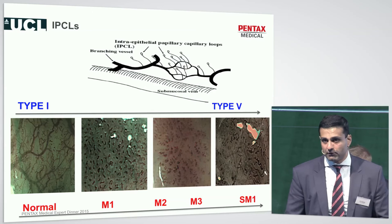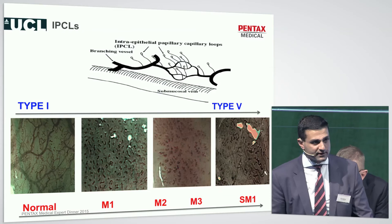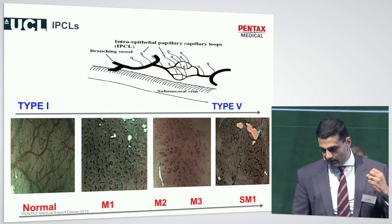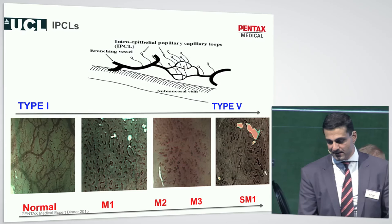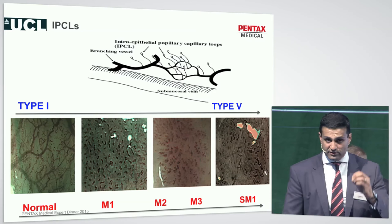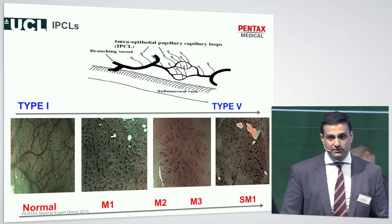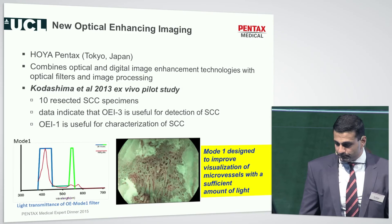The intrapapillary capillary loops — IPCLs — are something most UK endoscopy colleagues will never have heard of, but this is a true phenomenon. These are the branching submucosal vessels that go through a vascular to an avascular stage through the neoplastic-to-cancer sequence. Subtle abnormalities in these IPCLs help you differentiate between mucosal disease amenable to mucosal resection, slightly deeper disease needing submucosal dissection, and disease that needs to go to surgery.